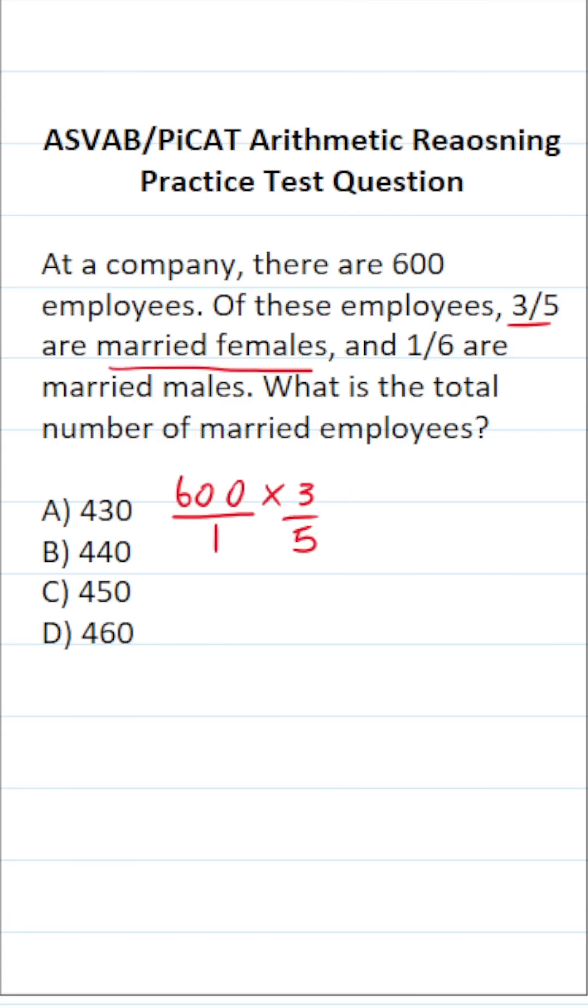This enables us to cross-reduce. I can say 5 goes into 5 one time. 5 goes into 60 12 times. Therefore, it goes into 600 120 times.